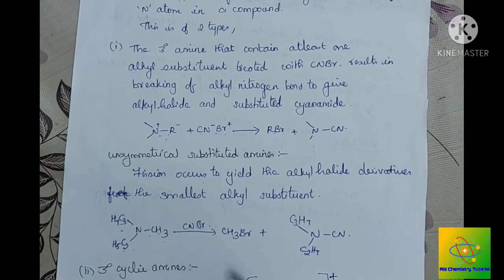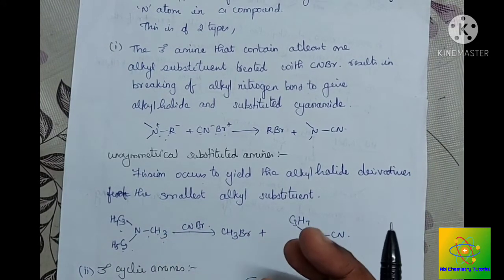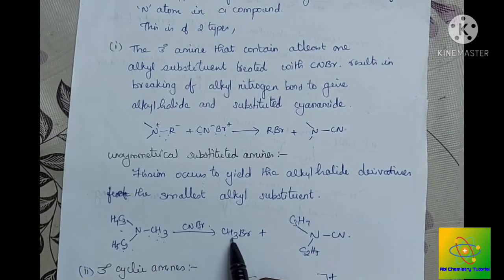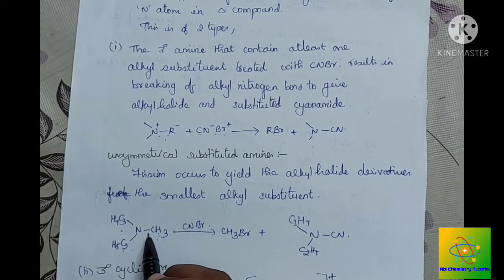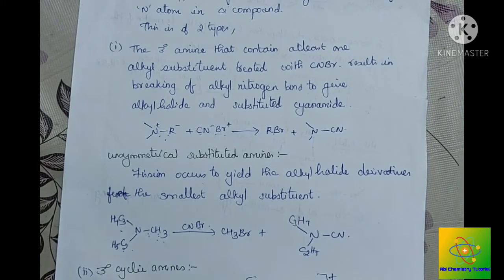The bromine leaves and attaches to the smallest alkyl substituent, while cyanogen attaches to the nitrogen. This method is used for the characterization of tertiary amines — both acyclic tertiary amines and cyclic tertiary amines.